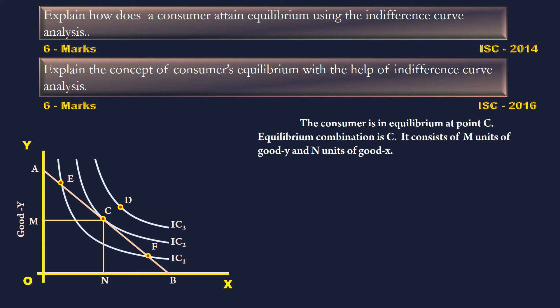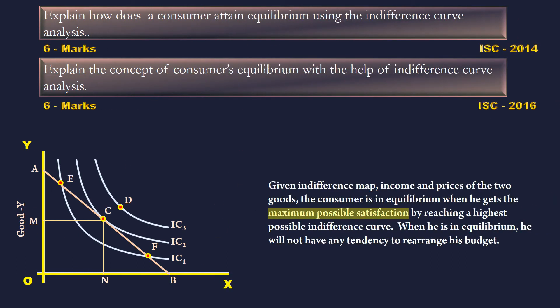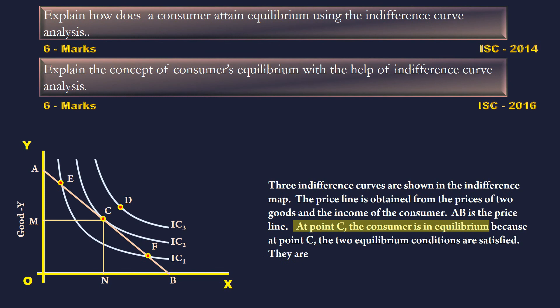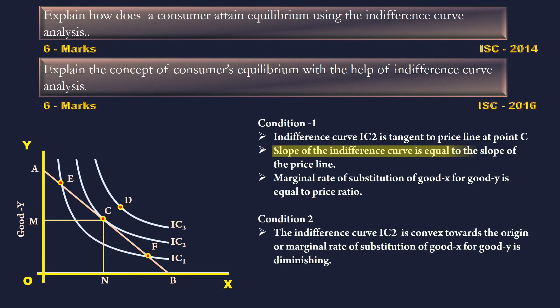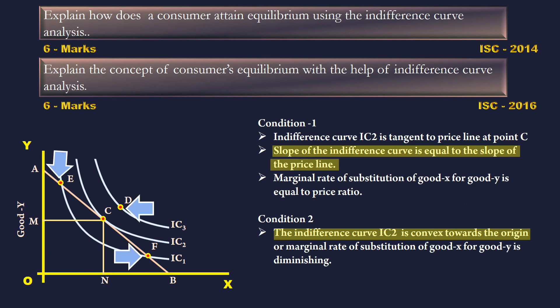The key points in this answer are: maximum possible satisfaction; equilibrium point is C; conditions for equilibrium — the slope of the Indifference Curve equals the slope of the price line, and Indifference Curve IC2 is convex towards the origin. Also explain why points E, F, and G are not equilibrium points. Give importance to these key points while answering this question.